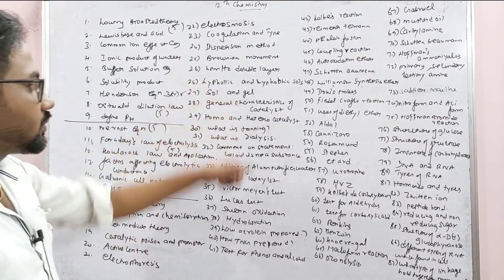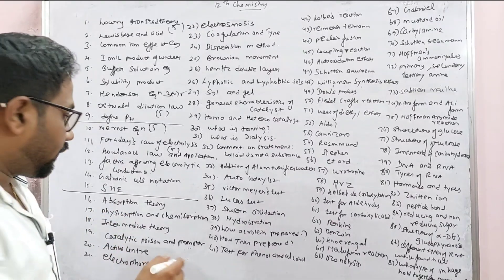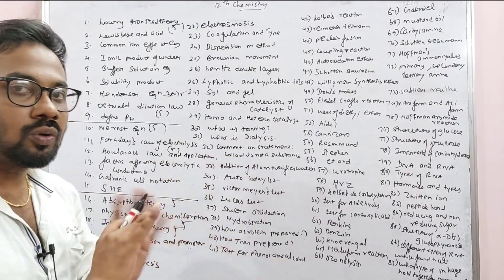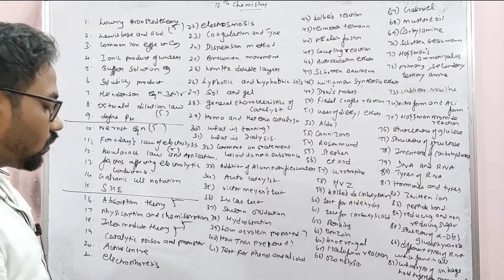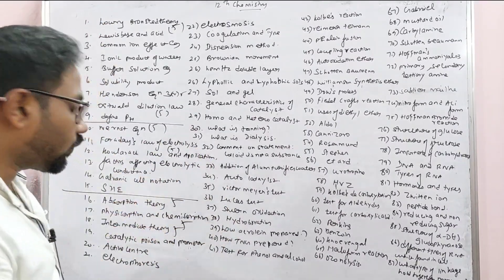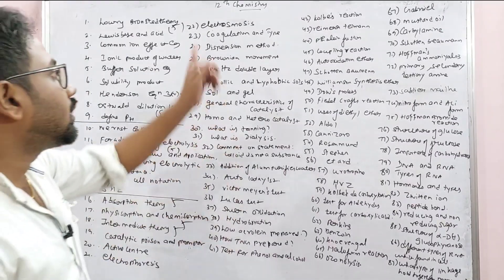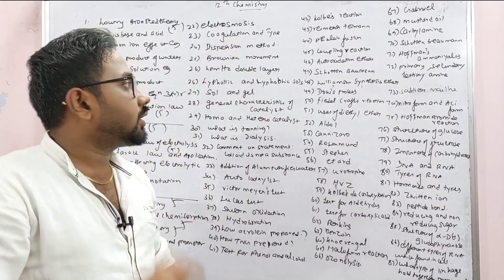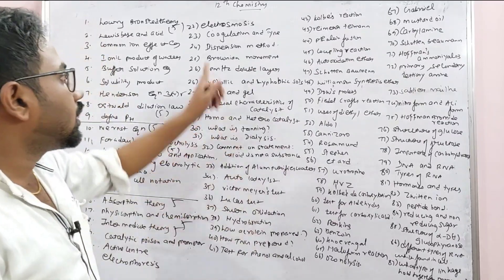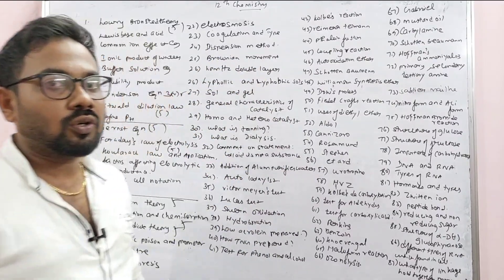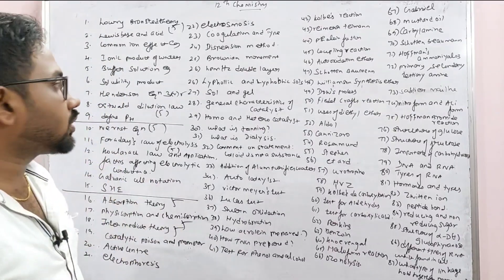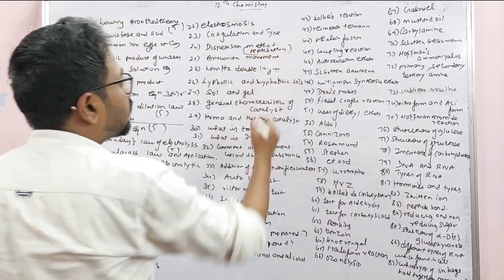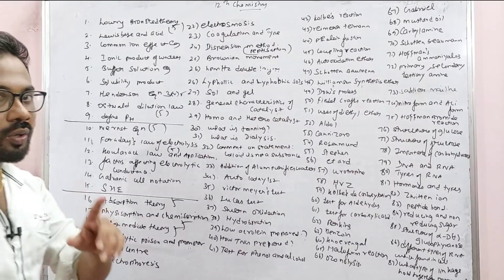Electrochemistry, Surface chemistry, Absorption theory — this is a direct 5-Mark. Intermediate theory, Catalytic poison, Promoter, Active center. Electrophoresis with diagram. Coagulation, Dispersion method, Bredig arc method. Peptization 3-Mark.